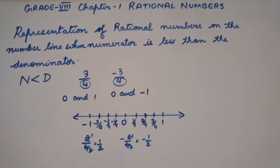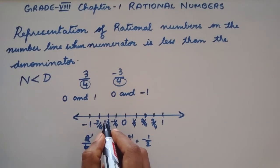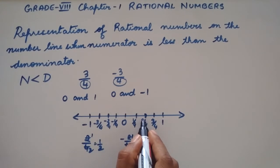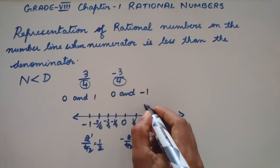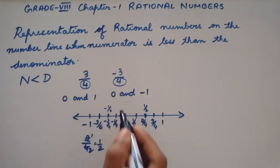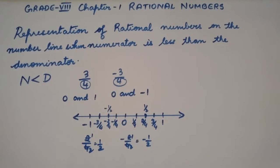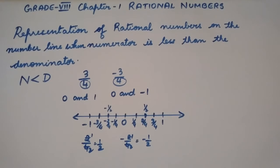So 2 by 4 is nothing but 1 by 2, and minus 2 by 4 is nothing but minus 1 by 2. So instead of 2 by 4, I can plot this as 1 by 2, that is half, and here minus 1 by 2, that is minus half. Is this clear, students? In the next video session, let us learn the representation of rational numbers on the number line when the numerator is greater than the denominator.